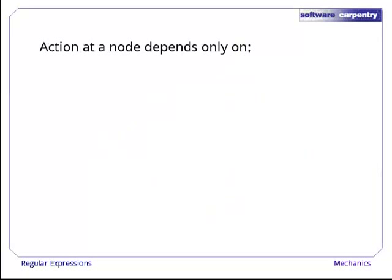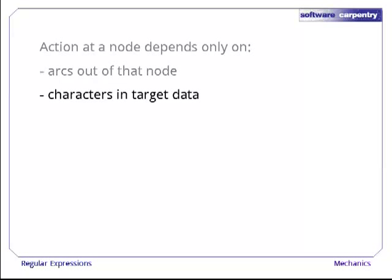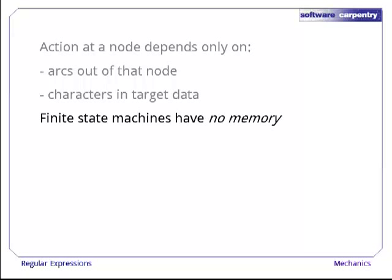The most important thing about a finite state machine is that the action it takes at a node depends only on the arcs out of that node and the characters in the target data. Finite state machines have no memory. They do not keep track of how they got into a state. All decision making is local to that state.